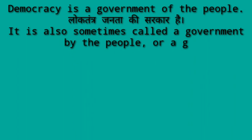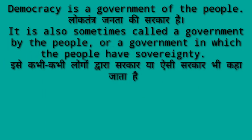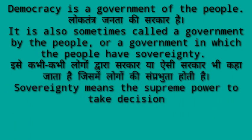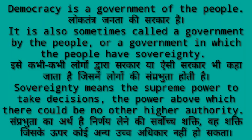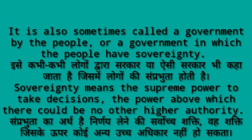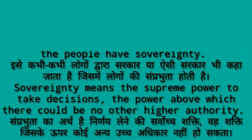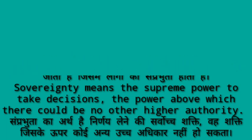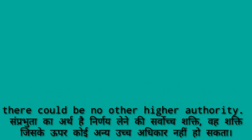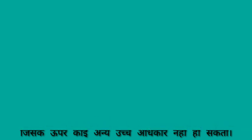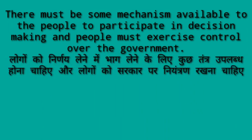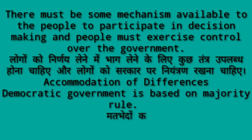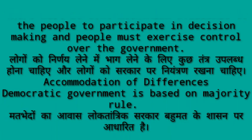Interesting facts: Democracy is a government of the people. It is also sometimes called a government by the people, or a government in which the people have sovereignty. Sovereignty means the supreme power to take decisions — the power above which there could be no other higher authority. There must be some mechanism available to the people to participate in decision making, and the people must exercise control over the government.